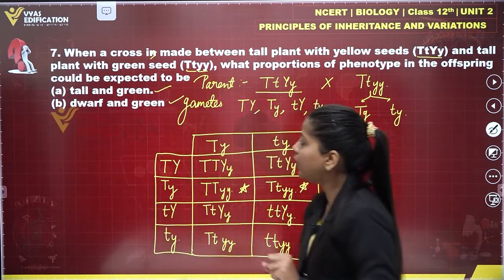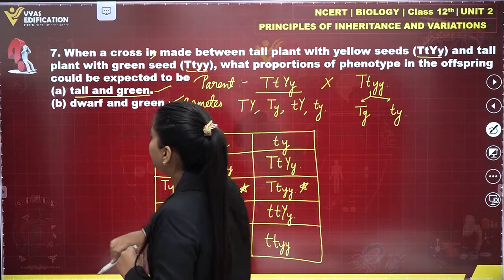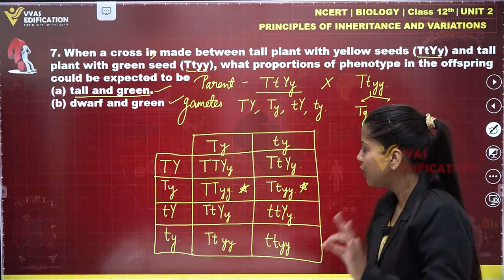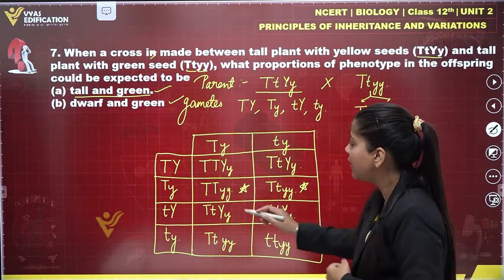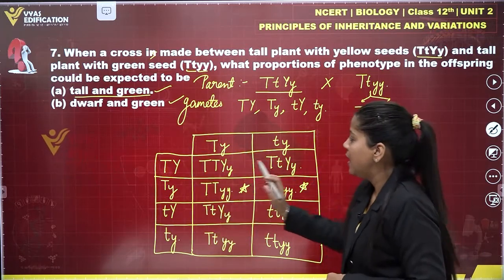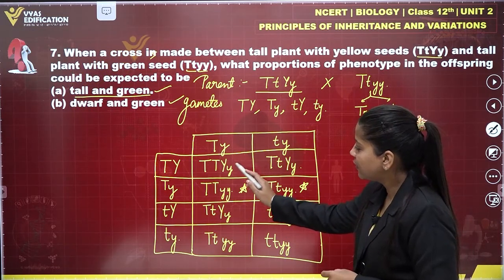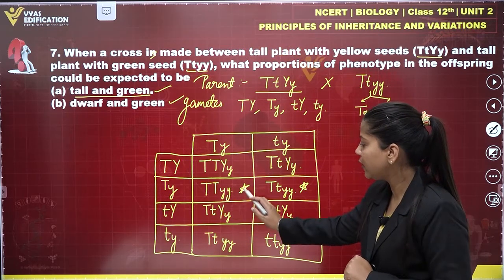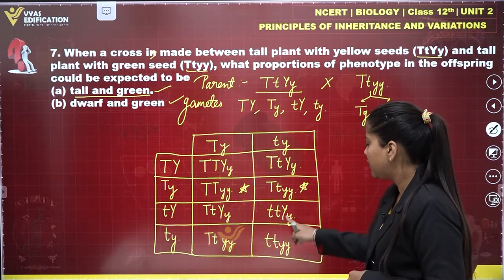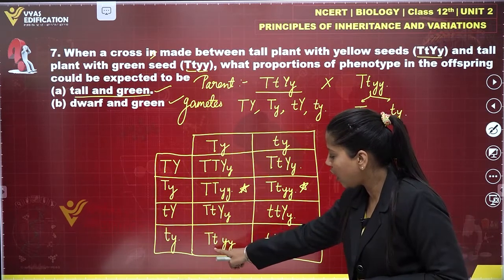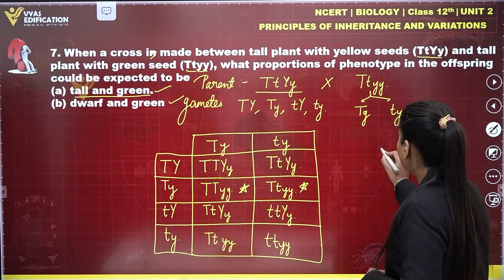Now we conclude what proportion of the phenotype in the offspring is tall and green, and dwarf and green. Tall and green means the plant height is tall and the seeds are green — homozygous recessive for seed color (yy). Among all offspring, identifying tall and green: we find three offspring showing tall and green phenotype.